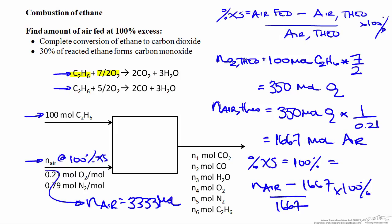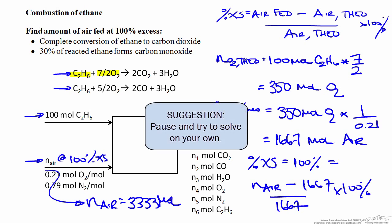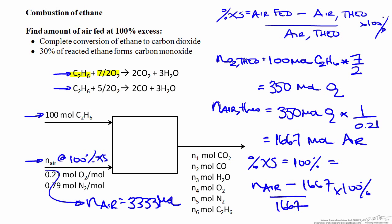How does this change if 30% of the reacted ethane forms carbon monoxide? The tendency is to find a new theoretical air requirement based on 70 moles forming carbon dioxide and 30 moles forming carbon monoxide. In actuality, the amount of air does not change. The percent excess only depends on complete combustion — it has nothing to do with what actually happens in the reactor. The percent excess calculation is based on the ratio between fuel and air assuming complete conversion and complete combustion only.